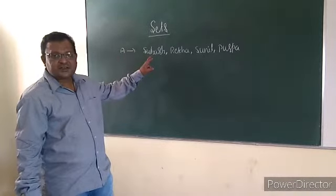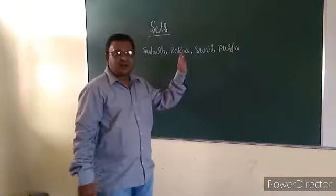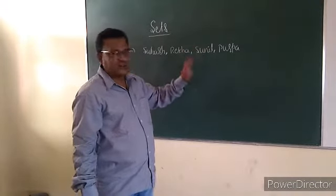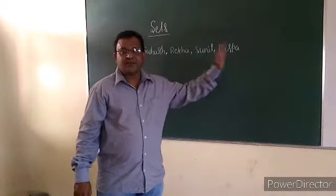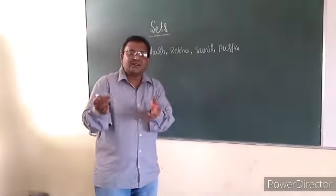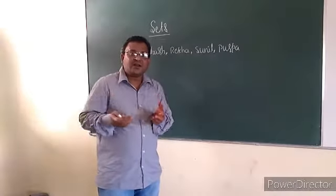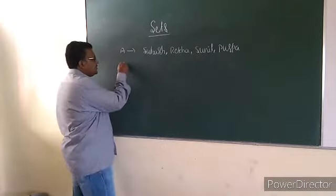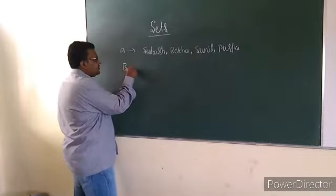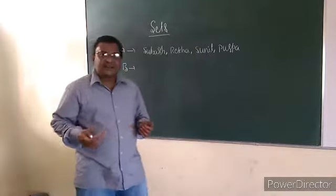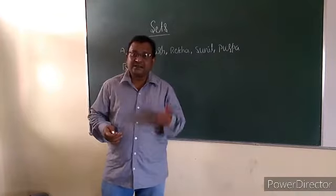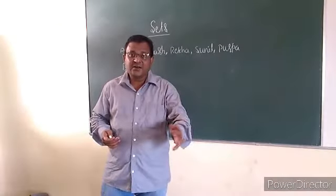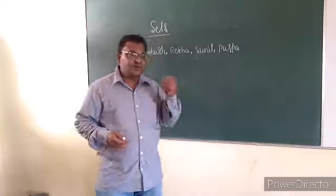Suvash is the father, Rekha is the mother, Sunil is his name, Pushpa is his sister. So he collected all the names. Similarly, person B collected the numbers which are multiples of 2.